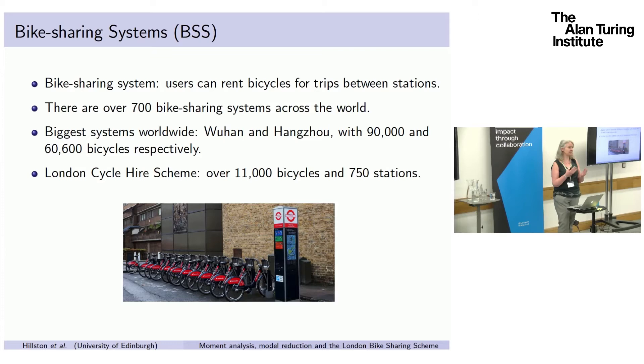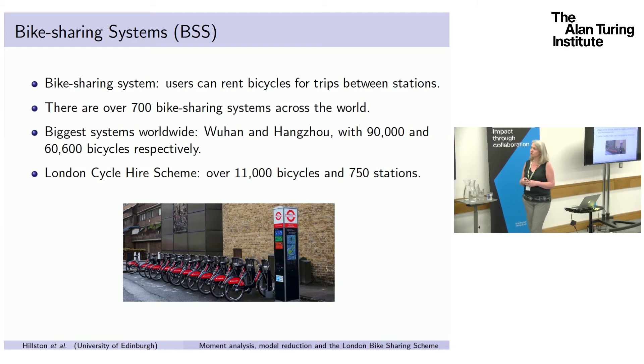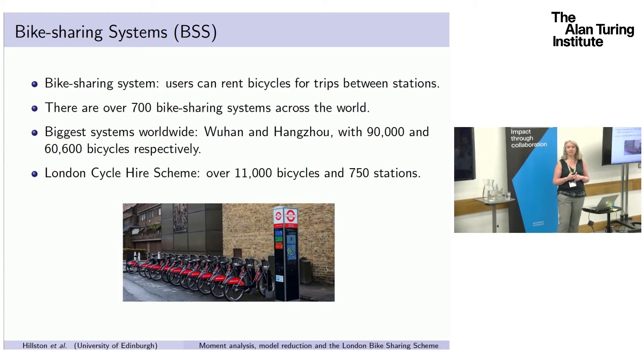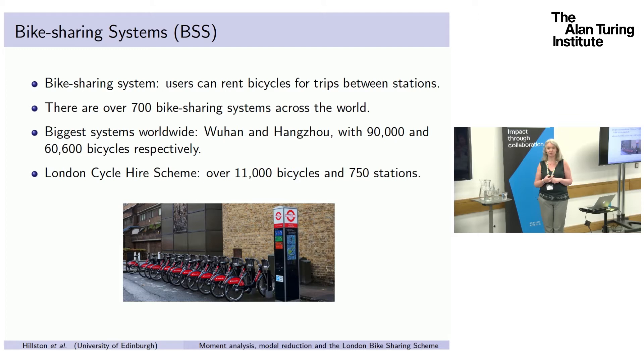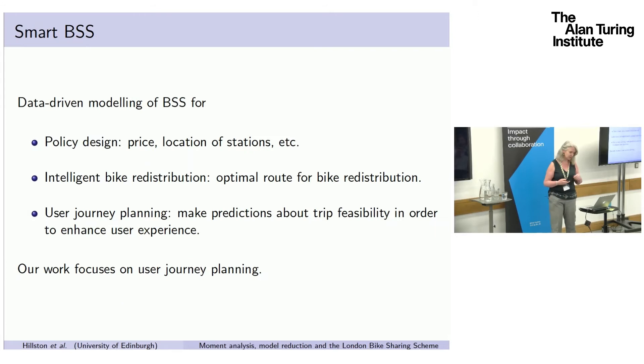But users report that the biggest reason why they don't use it is because when they get there, there's not a bike available. Or they reach the end of their journey and can't park their bike, so they have to look for another station. There's quite a lot of interest in predicting the behavior of these systems as interesting dynamical systems.